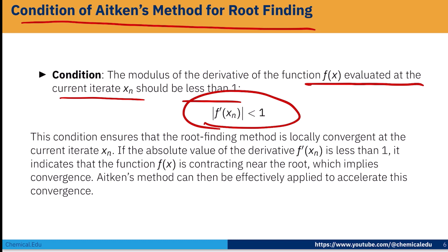The condition ensures the root finding method is locally convergent at the current iterate x_n. If the absolute value of the derivative |f'(x_n)| is less than 1, it indicates that function f(x) is contracting near the root which implies convergence, so Aitken's method can then be effectively applied to accelerate this convergence.